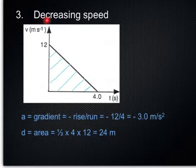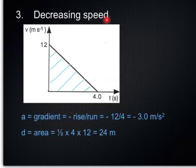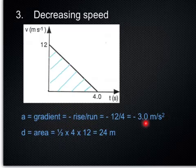The third type is decreasing speed. Acceleration is equal to gradient, which is now equal to negative rise, because the speed is dropping, divided by run. And the answer is minus 3.0 meters per second squared. Notice 3.0, two sig figs.